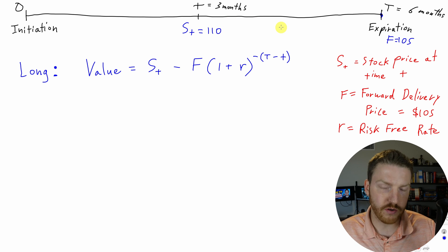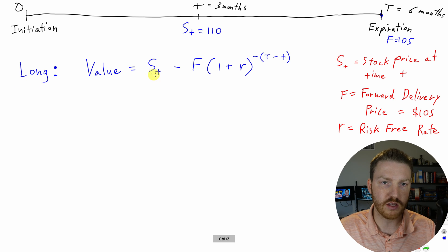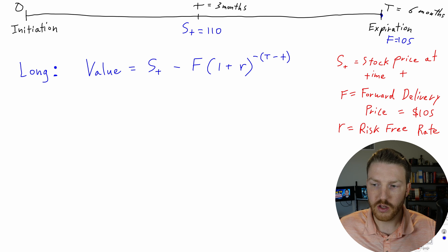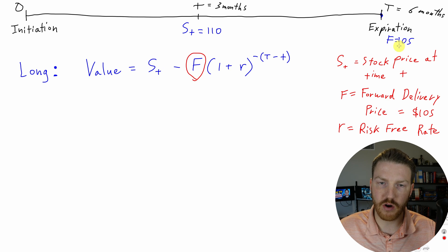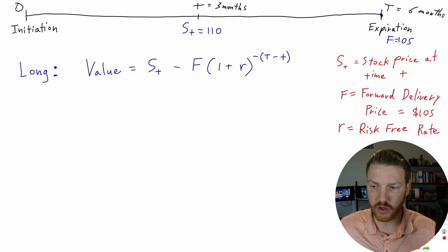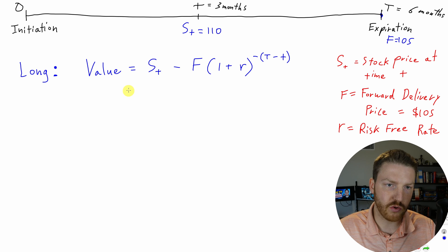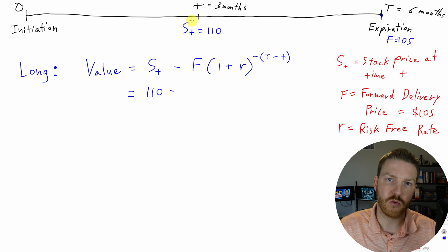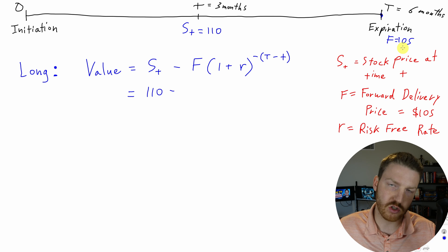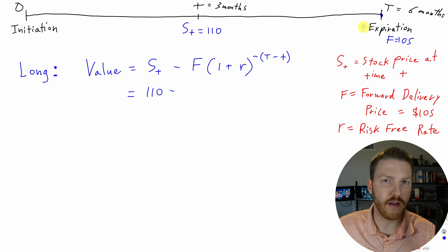How would we value our contract as the long? We can do that using a formula with two components. The first component is just the stock price ST of $110. The second component uses the forward delivery price of $105 and discounts it back at the risk-free rate for a certain period of time. We need to subtract what we're going to pay for that share, but since we're not paying it right now but in the future, there's a time value of money component. $105 received three months from now is not technically worth $105 today.